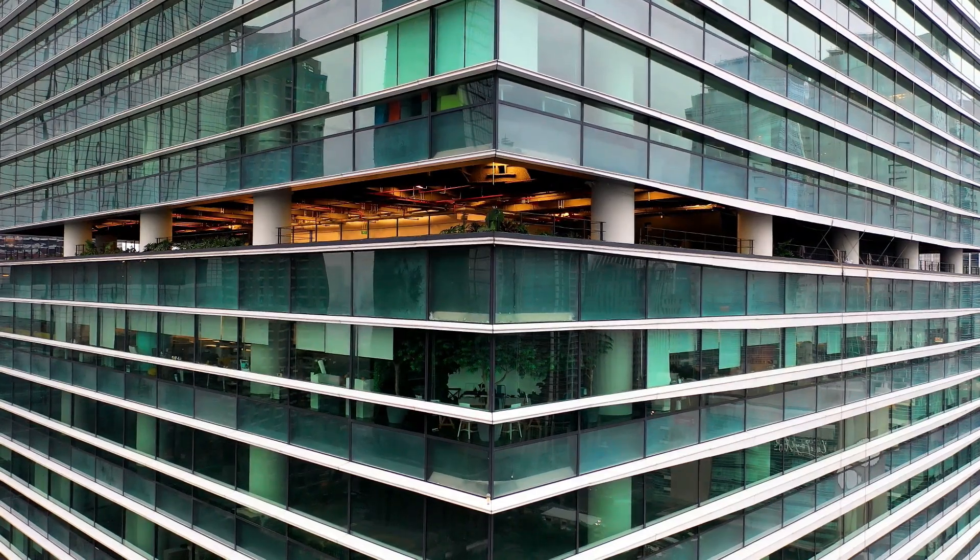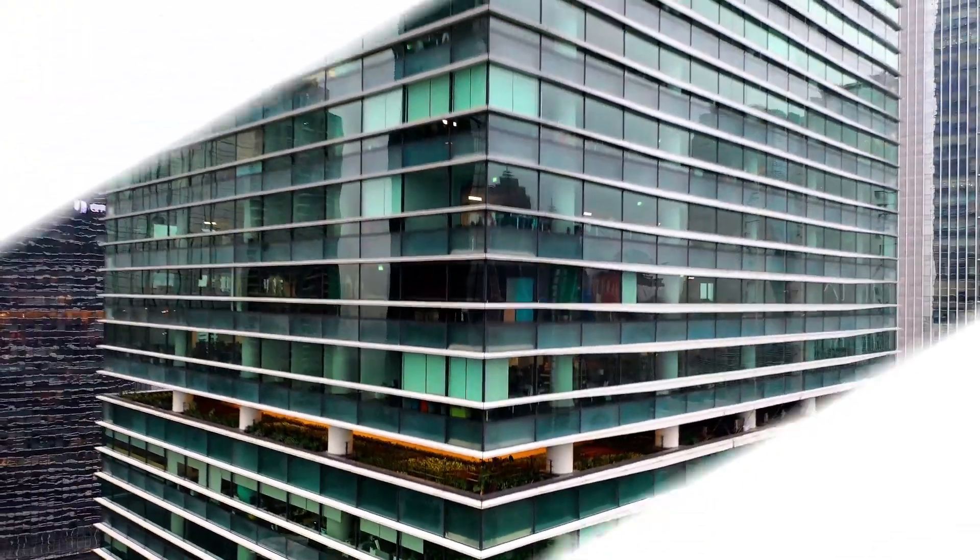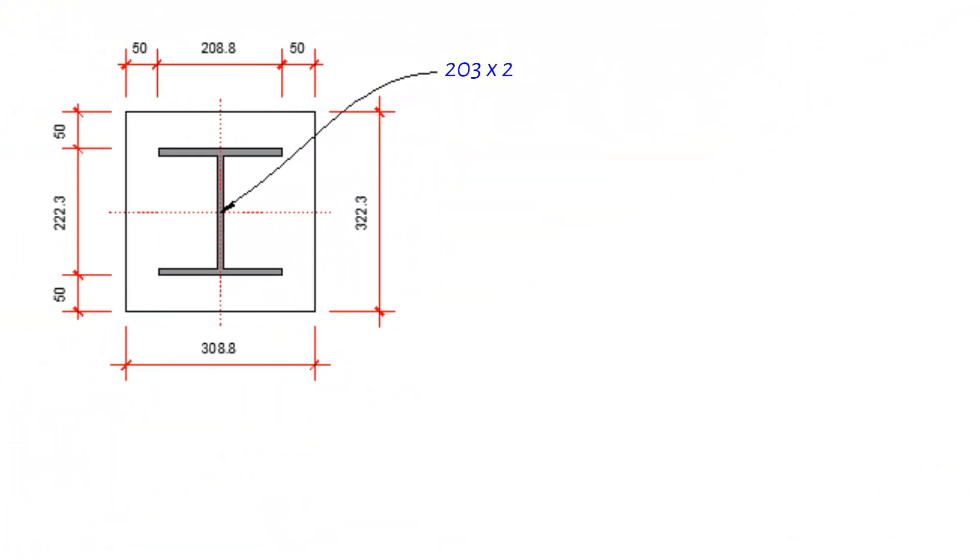Welcome back to the channel. Today, we're diving into the fascinating world of structural engineering. We'll be designing a 203 by 203 by 86 kilogram per meter UC column encased in concrete, just like the one you see on your screen. Have you ever wondered why we encase the column in concrete? Let's get started and find out.